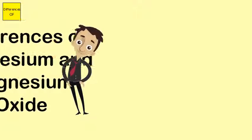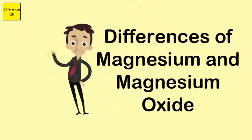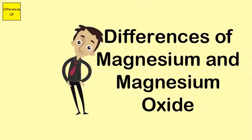Difference between magnesium and magnesium oxide: Magnesium is a base substance. Magnesium oxide is a substance derived from magnesium.